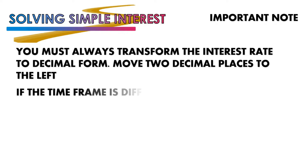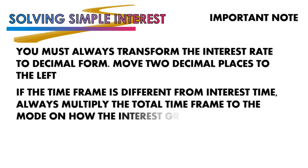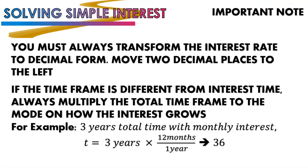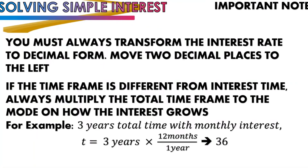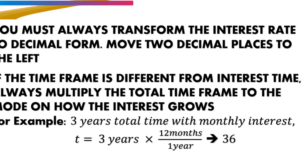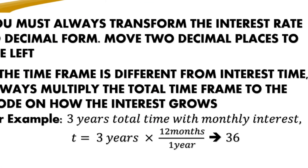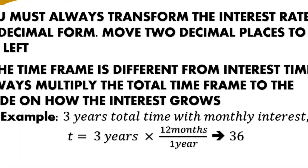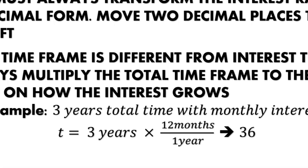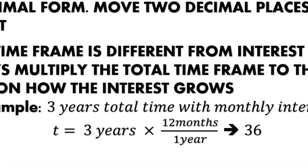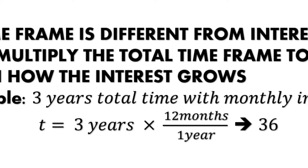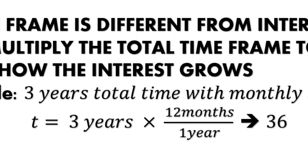Second, if the time frame is different from the interest growth period, you must convert. For example, if you have a total time frame of 3 years but the interest grows monthly, multiply 3 years by 12 months per year — the years cancel out — giving you 36 months. Conversely, if your time frame is in months and interest mode is yearly, convert months into years accordingly.